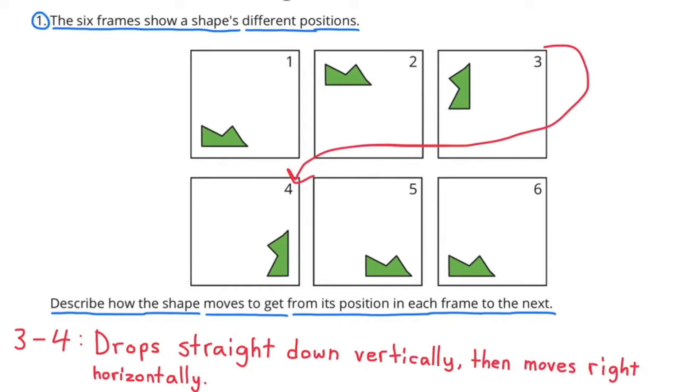Moving from frame 3 to frame 4, the shape drops straight down vertically, then moves right horizontally.